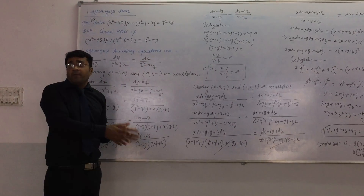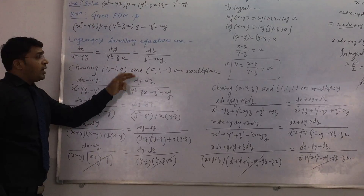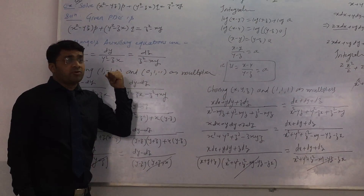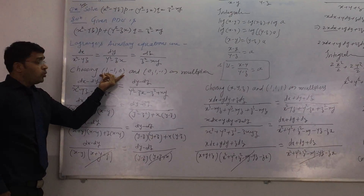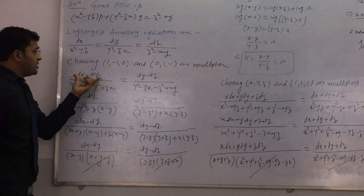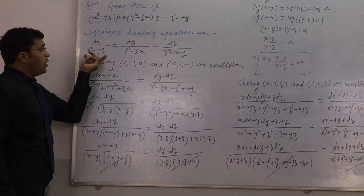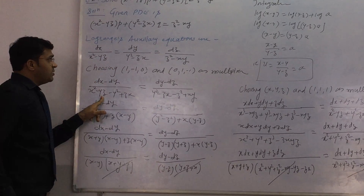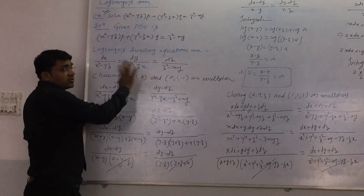We move to the multiplier method. I choose multipliers 1, minus 1, 0 as the first set. Multipliers must be non-zero, meaning all elements should not simultaneously equal zero. For this multiplier set, I form one ratio: multiplying by 1, minus 1, and 0, the denominator becomes x squared minus yz, then multiplying by minus 1 gives minus y squared plus zx.